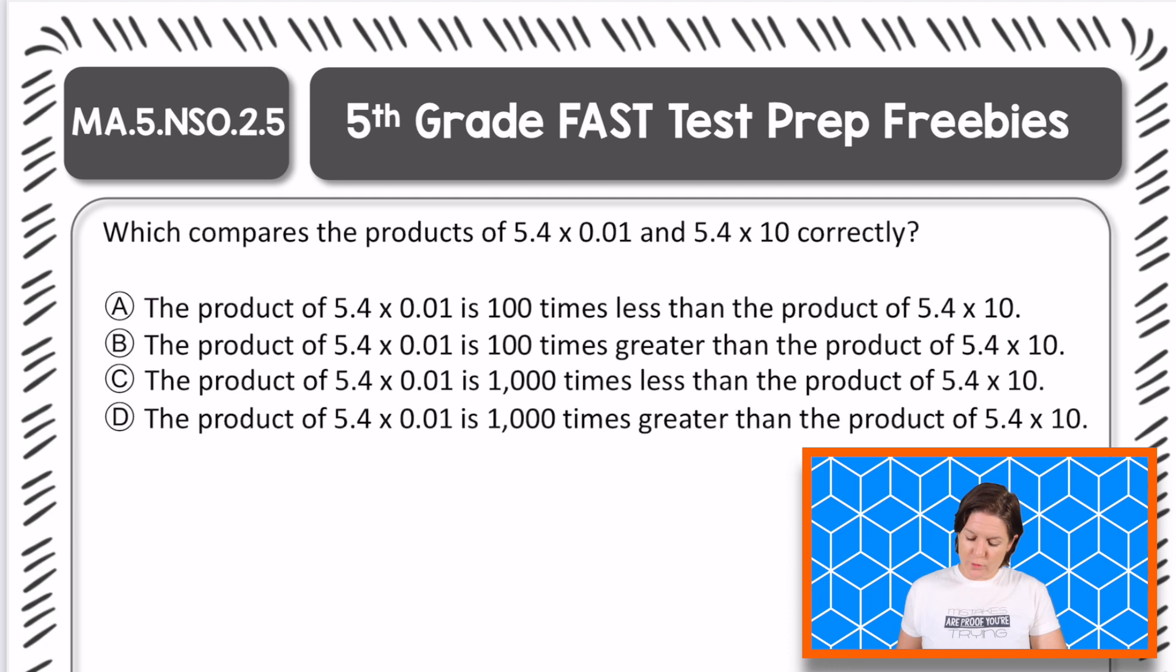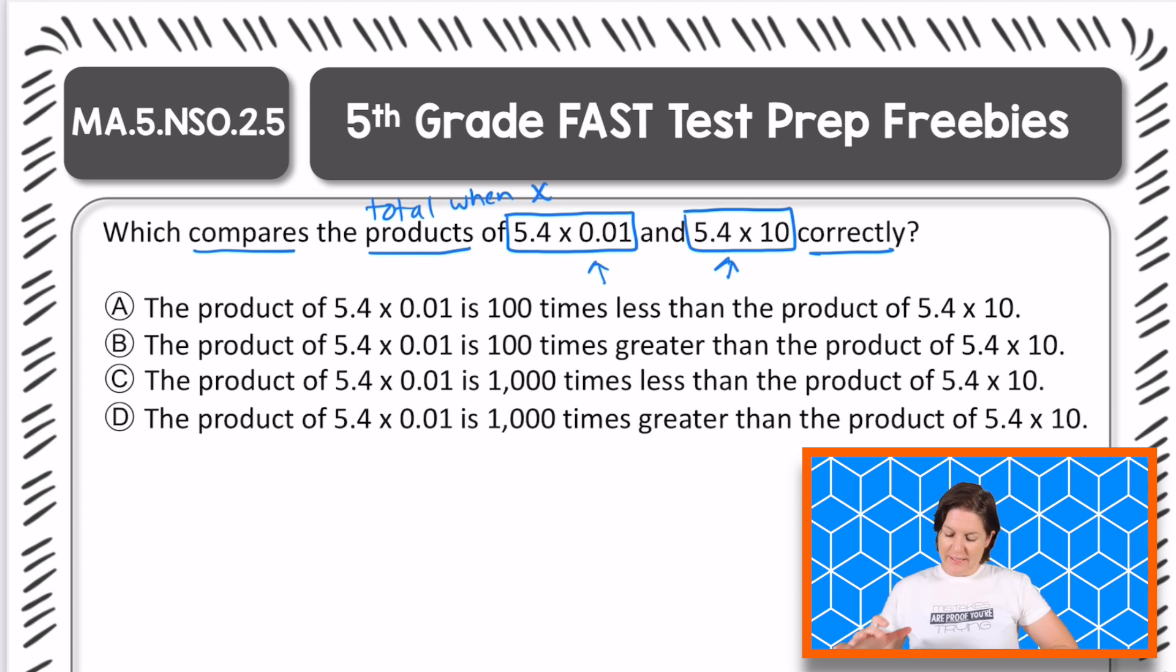Welcome back fifth grade. Let's go ahead and go over this one. It says, which compares the products, I know the products are the total when we multiply, the products of 5.4 times 0.01 and 5.4 times 10 correctly, which compares the products of these two correctly. Alright, before I even get going with the answer choices here, let me take a little look. I'm seeing it has to do with place value about being greater than or less than and moving through the different place values. That's what we're looking for. But I'm going to go ahead and solve each of these products out first. That way I can correctly compare them.